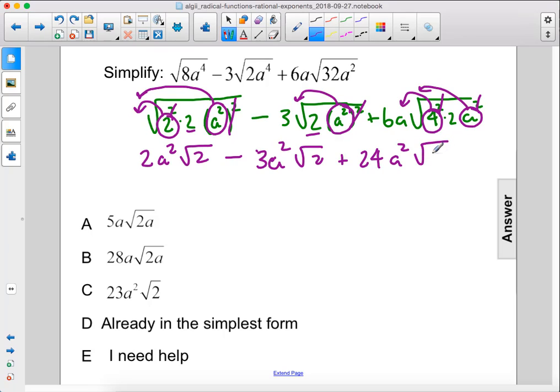So we actually do have three like terms here. We have a squared times the square root of 2, a squared times the square root of 2, a squared times the square root of 2. So we can combine the coefficients which are 2, negative 3, and 24, and that gives us 23 a squared times the square root of 2. The answer is C.